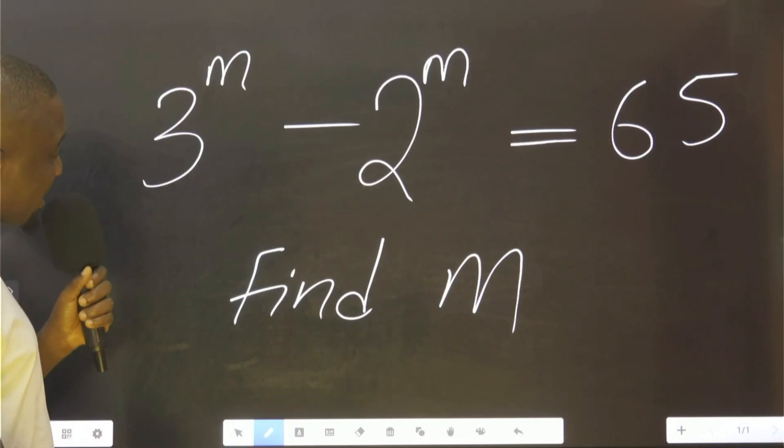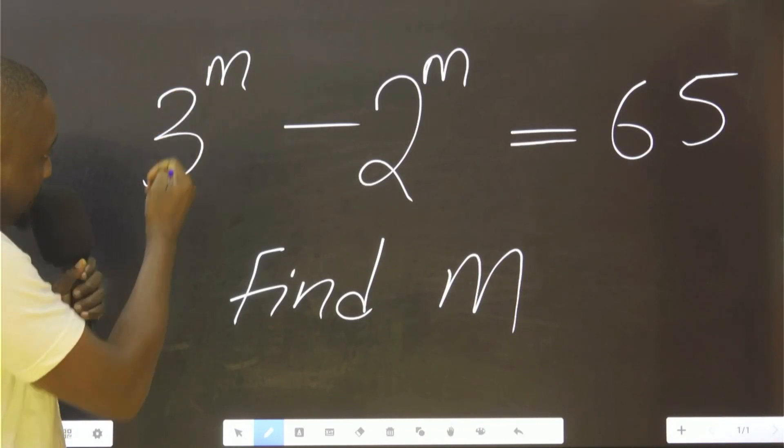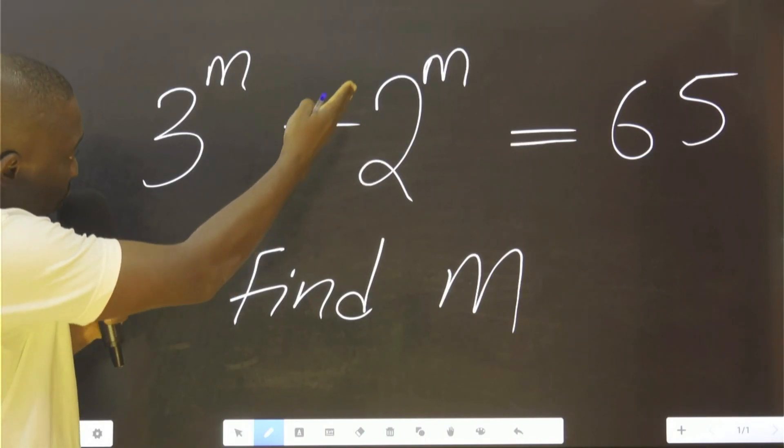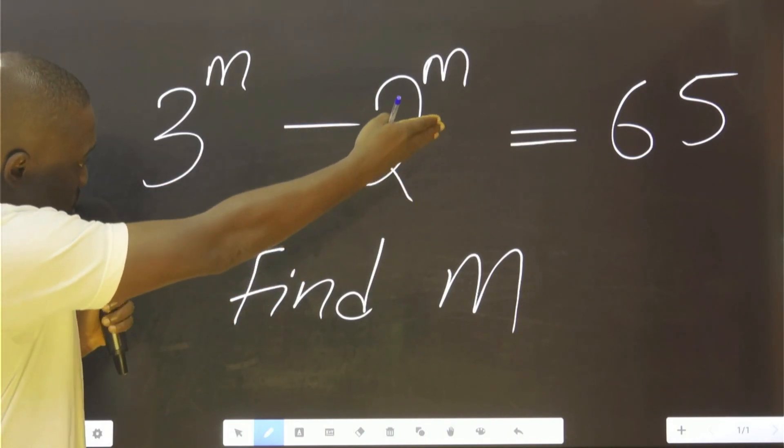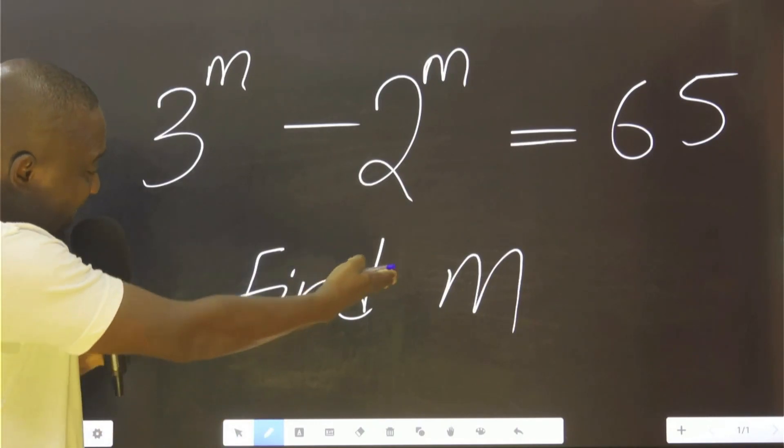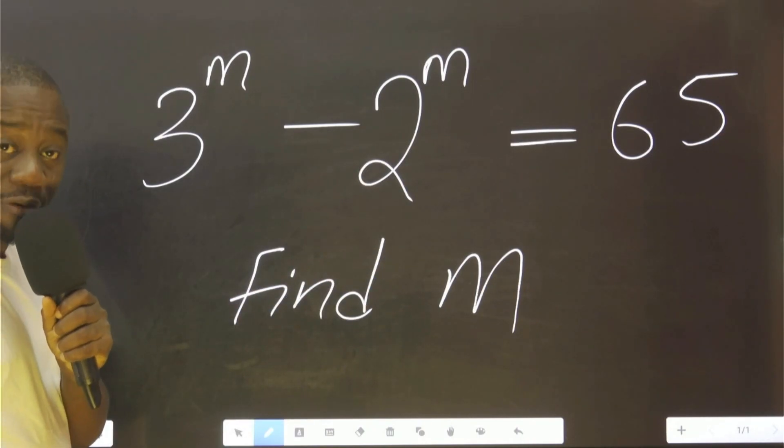Look at this question. It says 3 raised to the power of m minus 2 raised to the power of m equals 65. We should find m. How do we find m?